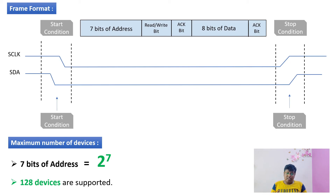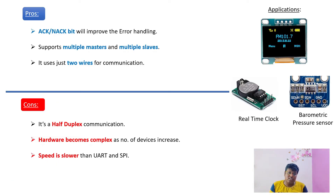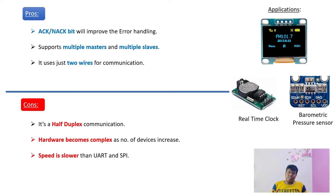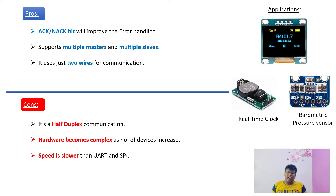I2C supports up to 128 devices, since it uses 7-bit addresses (2^7 = 128). The advantages of I2C include acknowledgement bits for error handling, multi-master and multi-slave support, and only two wires needed for communication. The disadvantages are that it is half-duplex — either the master talks to the slave or vice versa, but not simultaneously — hardware complexity increases with more devices, and speed is slower than both UART and SPI.